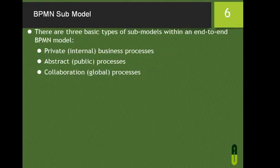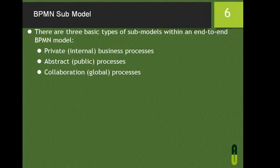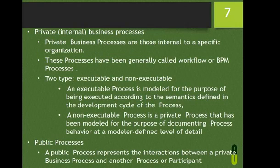There are three types of BPMN submodels within an end-to-end BPMN model: private business processes, public business processes, and collaboration business processes, also known as internal, public, and global processes. Private business processes are internal to a specific organization, generally called workflow or BPM processes.